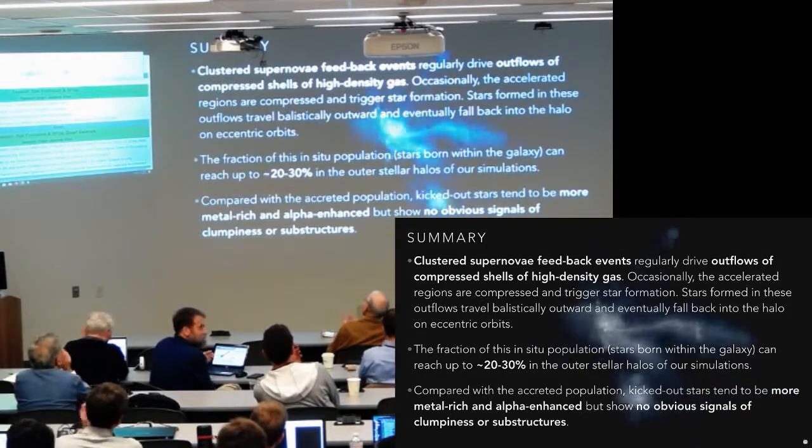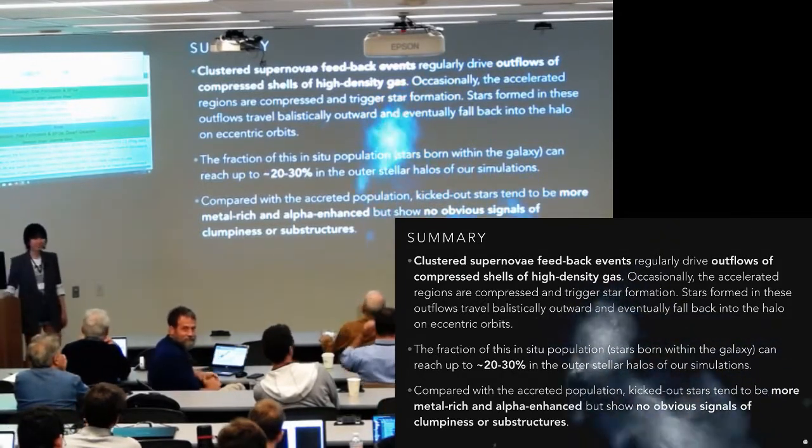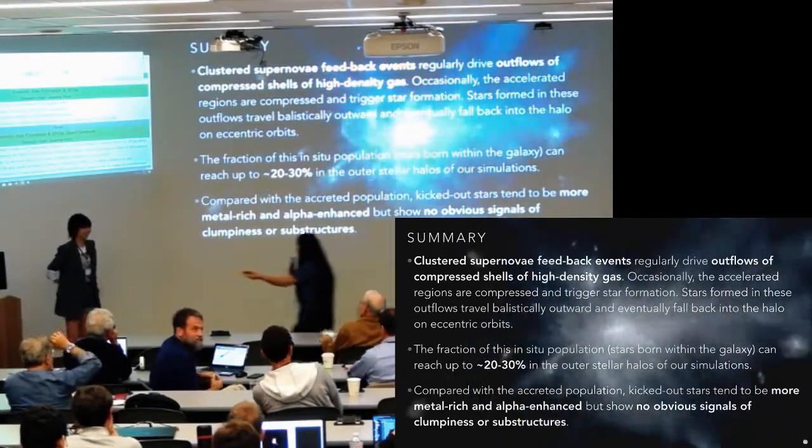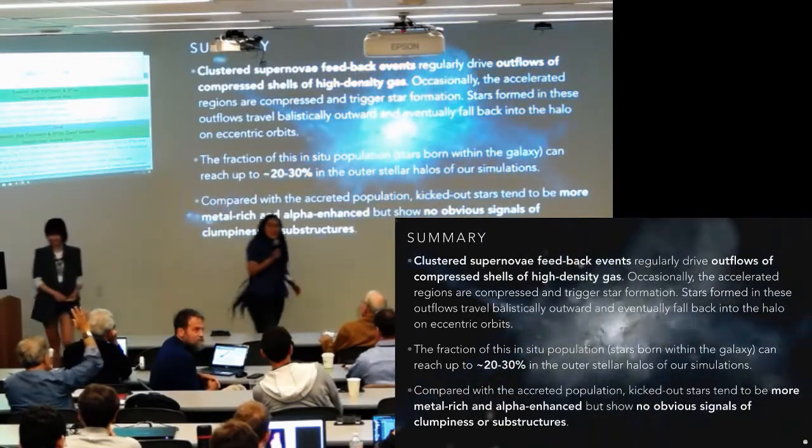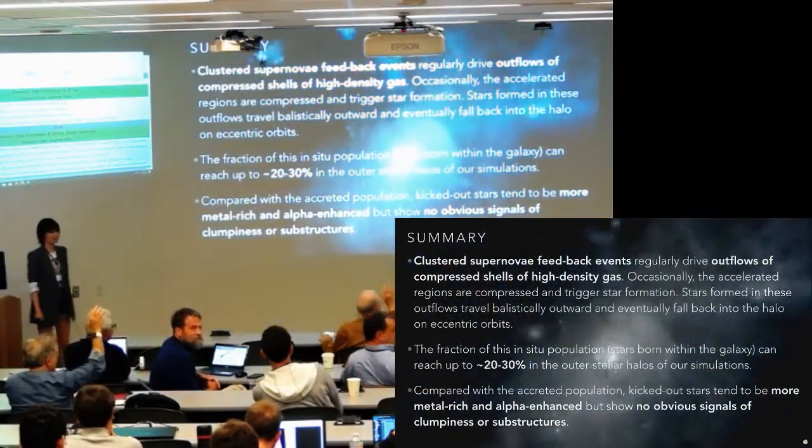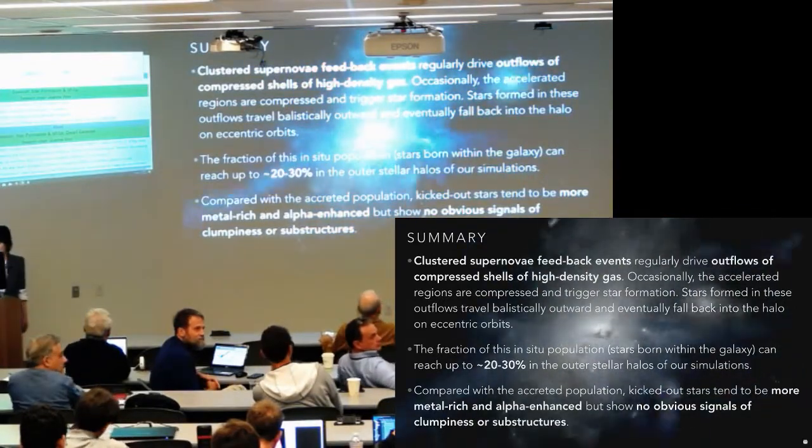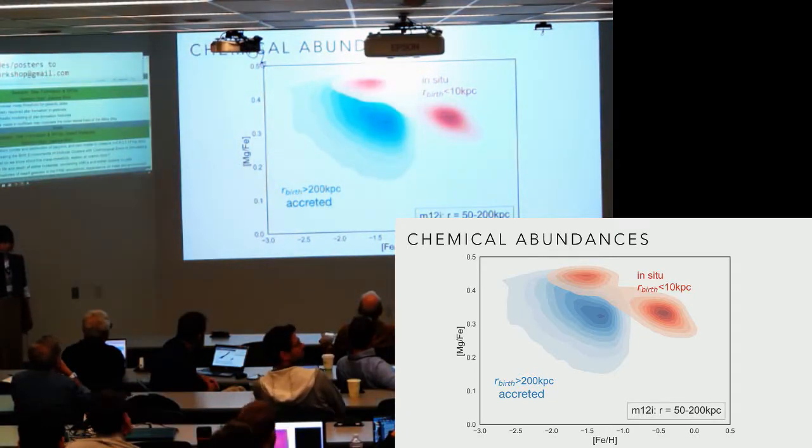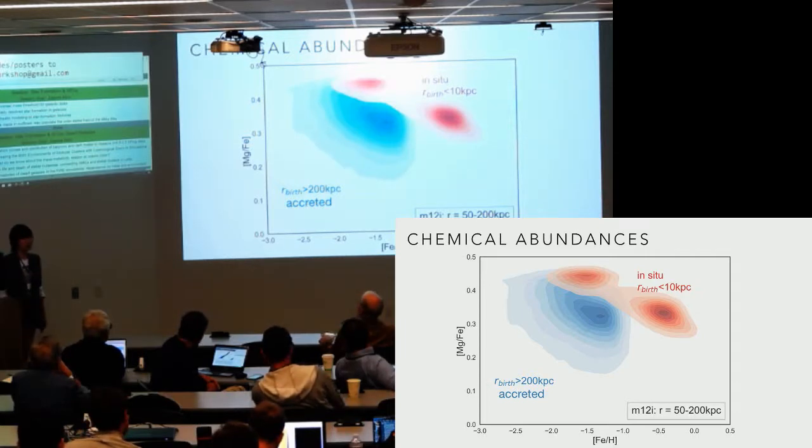Thank you very much. Do we have any questions for Sujie? Yes, the two sort of clumps of in-situ stars, did you check if they were coming from different outflow events? Yes, there are several—there are a lot of different outflow events in the history, so it's not just because of the one that I showed in the visualization.